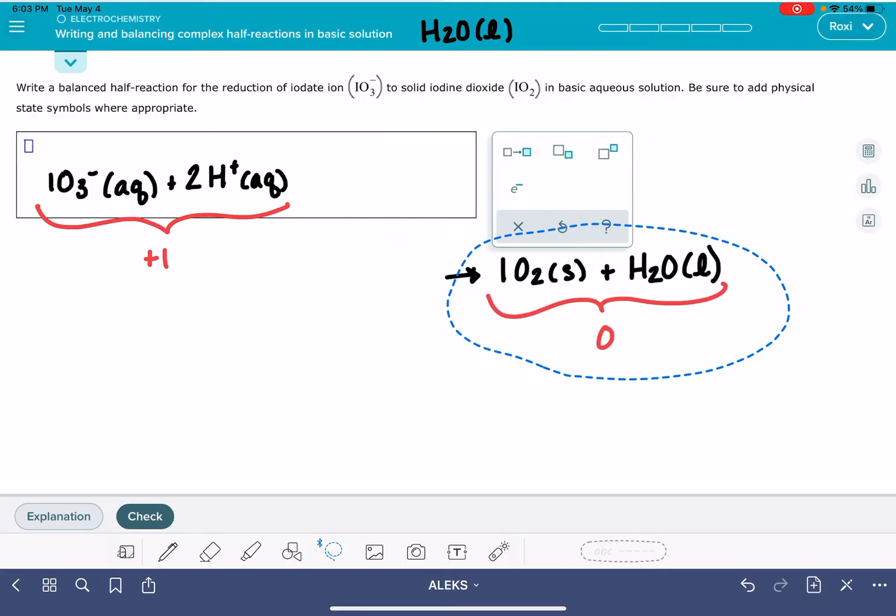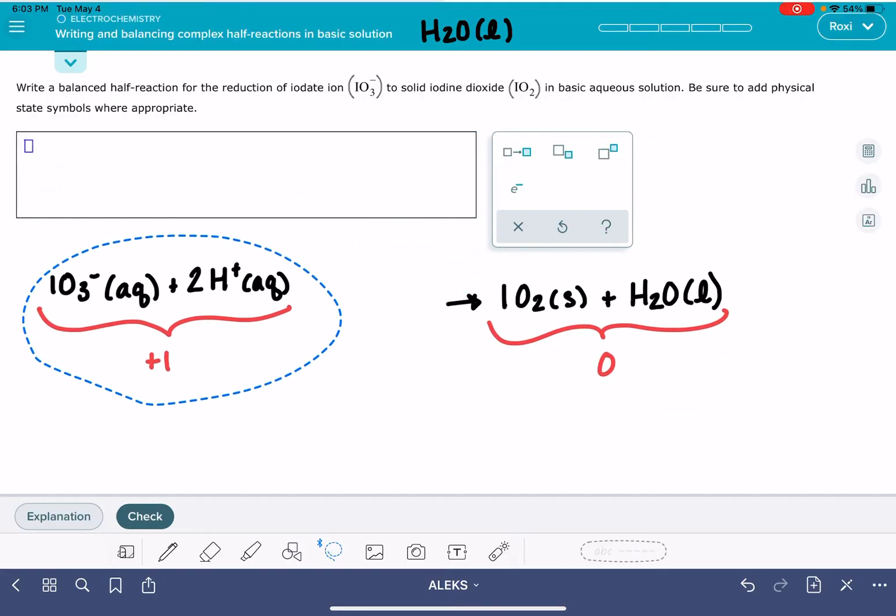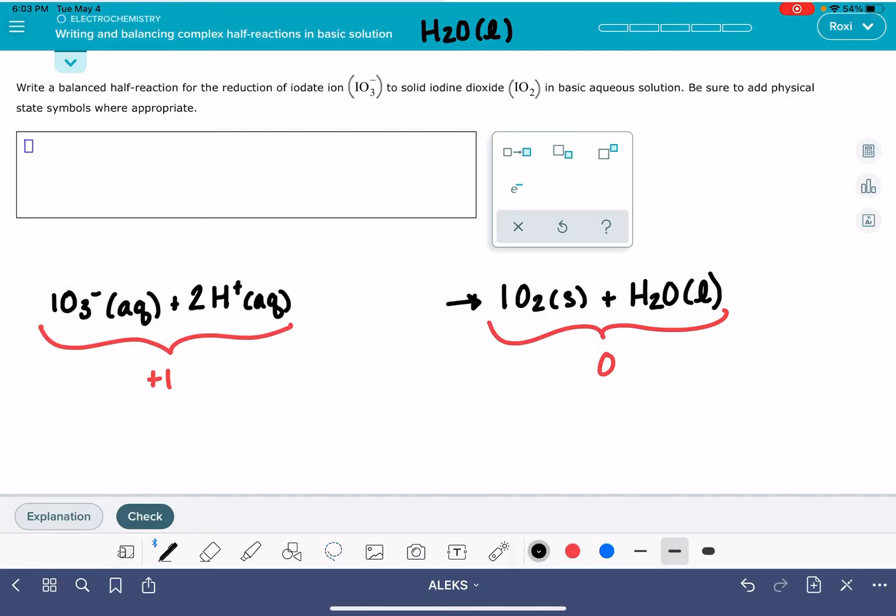I've got to move this stuff over. We are going to need one electron on the left-hand side. This is the one thing that you don't have to include a physical state on. It says include physical states where appropriate - electron is the only thing that doesn't need a physical state. So when we add that one electron, that gives us an overall charge of zero on the left-hand side.